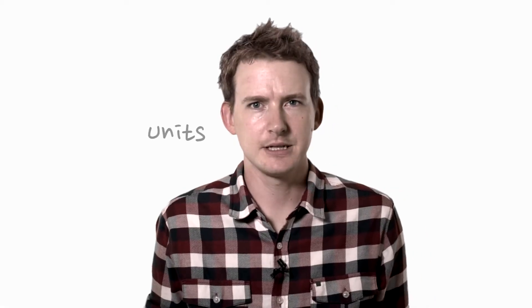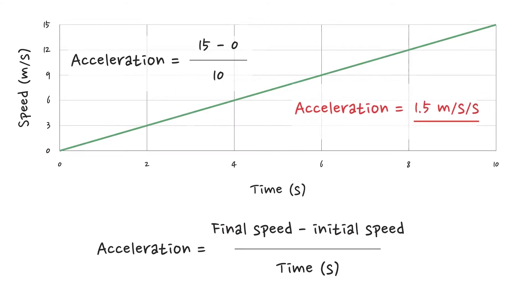Now those units sound a little bit fishy, don't they? Meters per second per second. But they do actually make a lot of sense. Just think about what calculation we're doing. We're using the speed, or a change in speed, in meters per second and dividing that by the time, which is seconds. So it's meters per second divided by seconds.